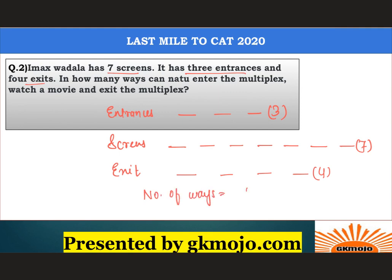The number of ways = 3 × 7 × 4 = 84 ways. Hence the correct answer is 84.